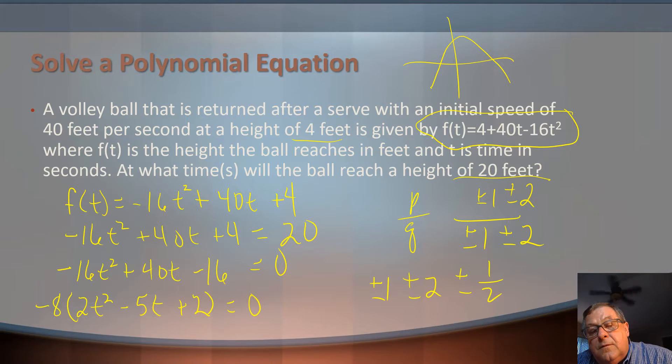And so those are my possible real zeros. In this case, all of the negatives, since we're talking about time, can't come into play, right? Because time's not negative. So we're either talking about 1 second, 2 seconds, or a half a second. Let's go to the next slide and do a little work on that using these possible rational zeros.